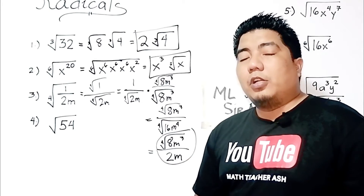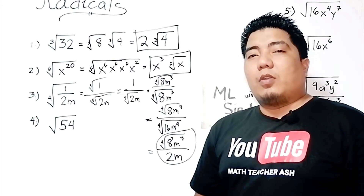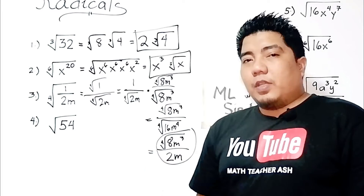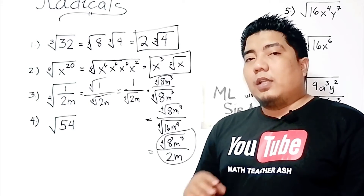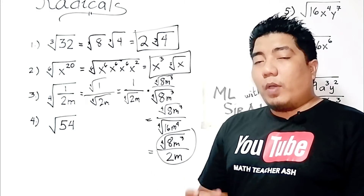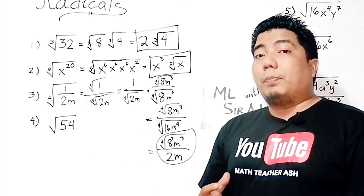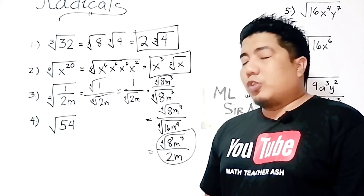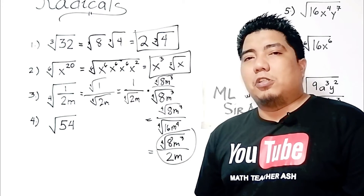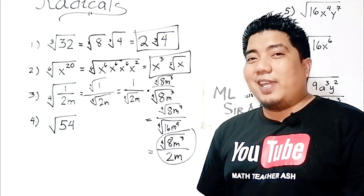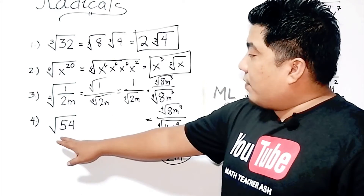Note: when the index is even, there are two possible roots — positive and negative. However, in simplifying radicals we are only getting the principal roots of the given expressions.